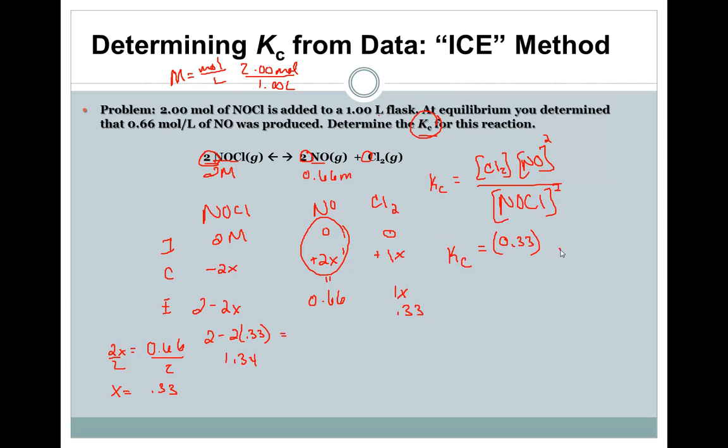The Kc is then equal to 0.14 over 1.80 which comes out to be 0.0801. Now, that was an extremely easy one where we had all the variables we needed. What happens when we don't have that information?